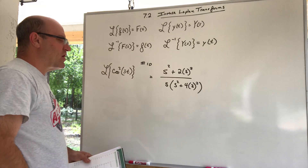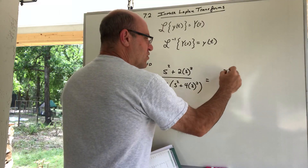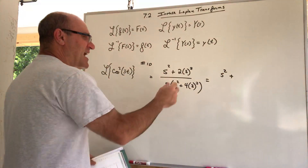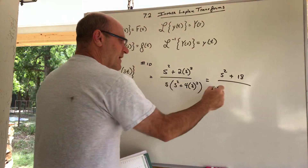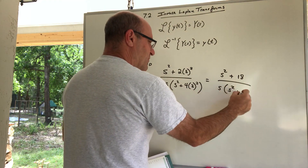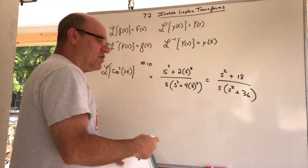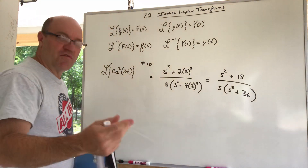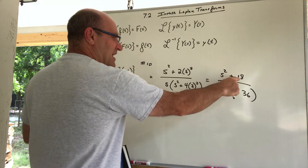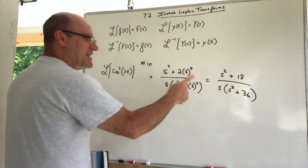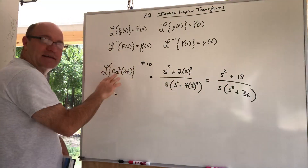When we clean up the result it can look a bit disguised — you get s(s² + 36) in the denominator with 18 in the numerator. If you're trying to go backwards and do the inverse Laplace, you'd have to identify that k = 3 to get back to the original form.